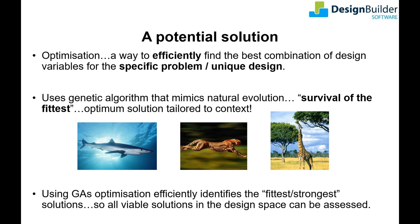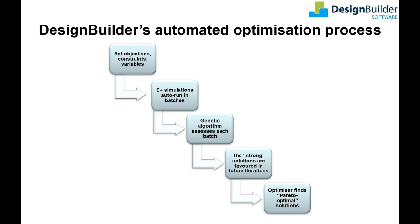The whole point of optimization is that it enables you to quickly and effectively search the whole design space to find the truly optimal combinations of design variables. It does this using a genetic algorithm which operates on the survival of the fittest principle of natural evolution. Using this advanced algorithm, optimization provides the design team with confidence that they will have identified all the strongest potential design solutions.